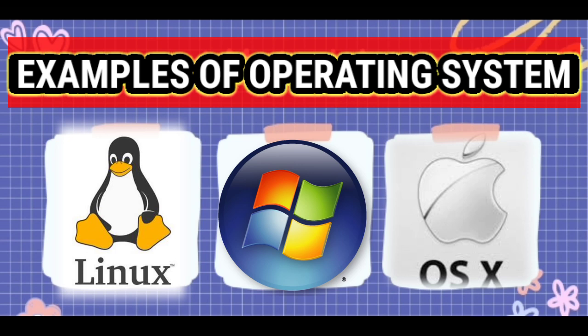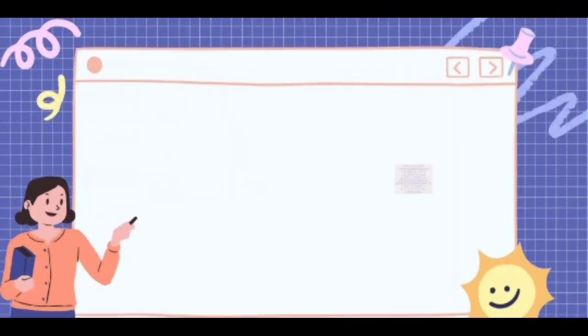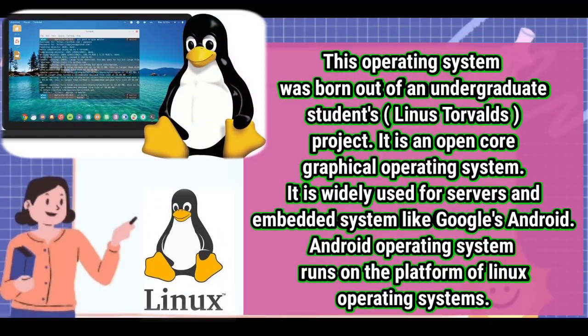I want you to listen so you can know the people who developed the different operating systems. The first one is Linux. This operating system was born out of an undergraduate student, Linus Torvalds, from his project. He had the inspiration of making an operating system, so he made the Linux operating system. It is an open-source graphical operating system.